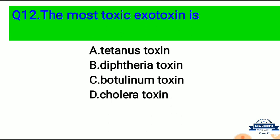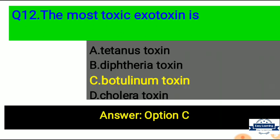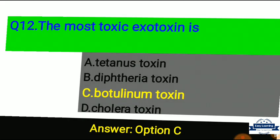Question 12: The most toxic exotoxin is — Option A: Clostridium toxin, Option B: Diphtheria toxin, Option C: Botulinum toxin, Option D: Cholera toxin. Correct answer is Option C, Botulinum toxin — the most toxic exotoxin is Botulinum toxin.